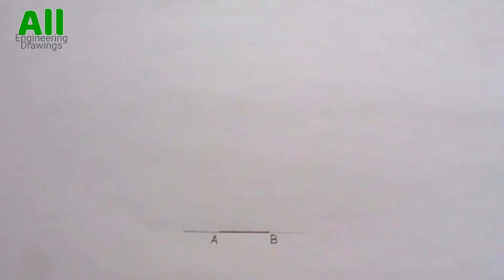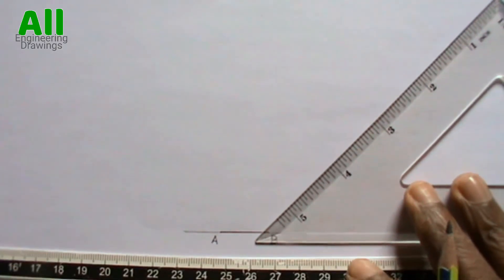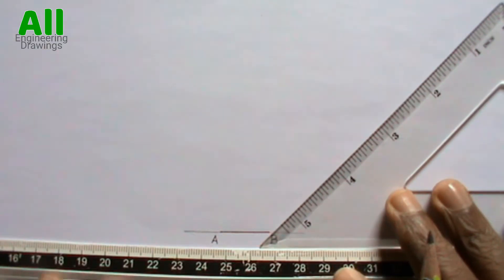Now, draw lines inclined to the horizontal at 45 degrees from point A and point B. You can do so using your 45 degree set square.